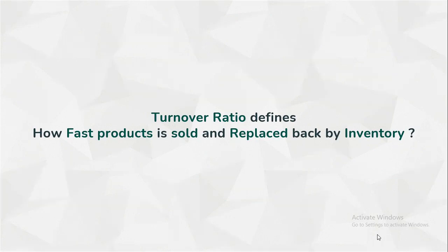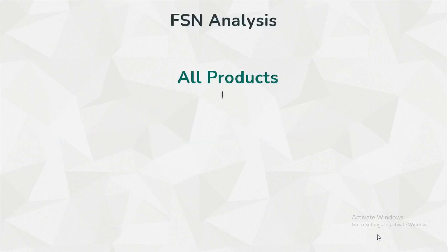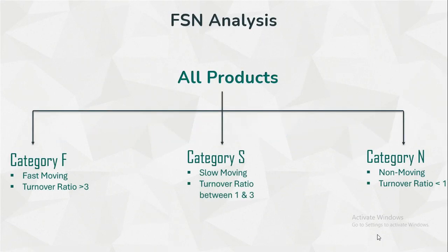Whereas you should get rid of all products belonging to category N as early as possible. The turnover ratio defines how fast a product is sold and replaced back by inventory. So if the turnover ratio is greater than 3, higher the turnover ratio means more the product is sold and more sell orders are placed by customers, indicating higher importance of that product in your business.